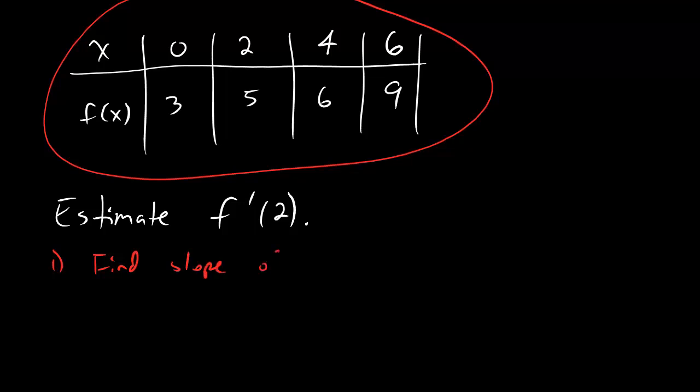We're going to find the slope between x equals 2, and then the next closest point to the right. So we'll say x equals 4. That's the first thing we're going to do.